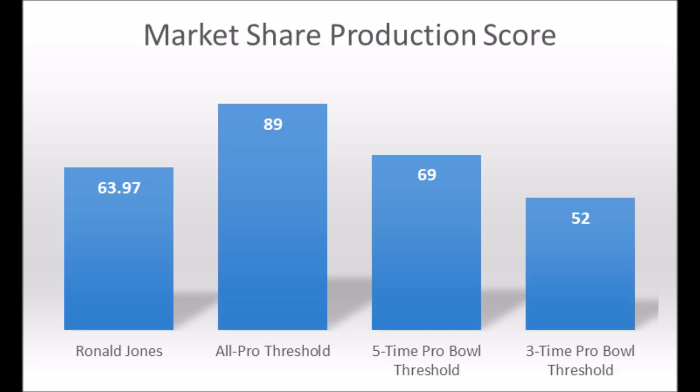He doesn't quite hit the five-time Pro Bowl area either, which is 69 or higher. That's guys like Marshawn Lynch and Frank Gore — guys that aren't exactly slam-dunk multiple all-pro types, but definitely very, very good. Running backs that are very good, not exactly all-pro, but definitely pretty decent.